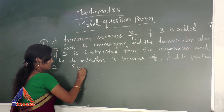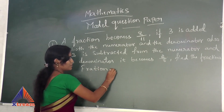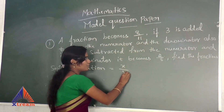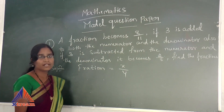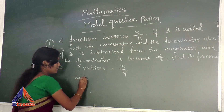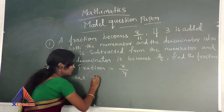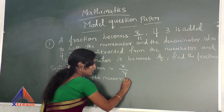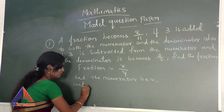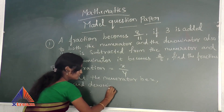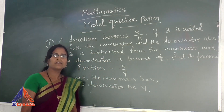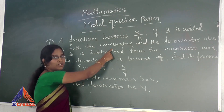Fraction means we always write it in the form of P by Q. You can take P by Q or X and Y — it should be numerator divided by denominator. So let the numerator be X and the denominator be Y. X by Y is the fraction.